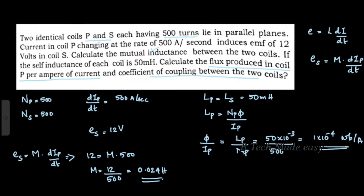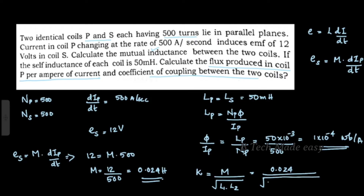Now, find the coefficient of coupling between the two coils. The coefficient of coupling is represented by the letter k, which is equal to M divided by the square root of L1 multiplied by L2.